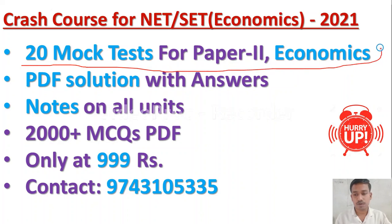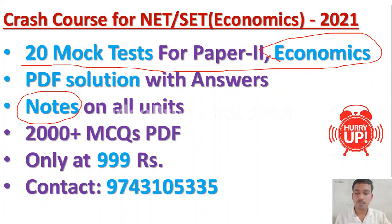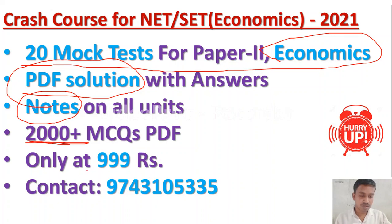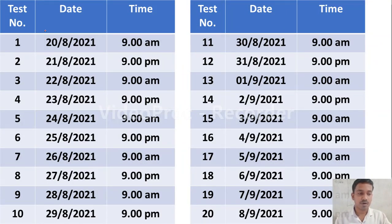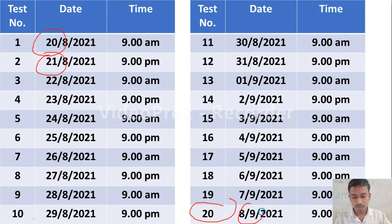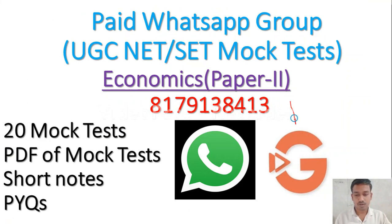In this crash course we are going to provide you 20 mock tests on paper 2 economics, along with notes on all units. After attending the test you will know your score, and we will provide solution PDFs for all 20 tests along with 2000 plus MCQs PDF including all previous year questions. This crash course is available only at Rs. 9.99. The first test will be on 20th August and the last test on 28th September 2021. You can register on the Global Online University app or directly on the WhatsApp group.